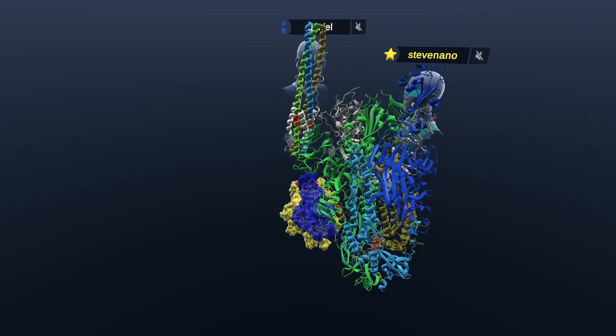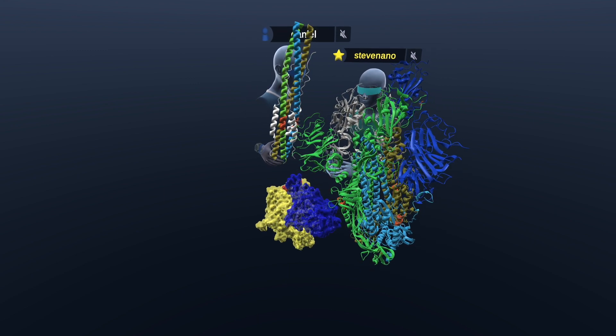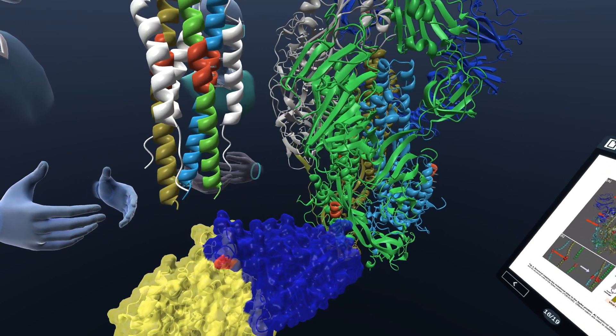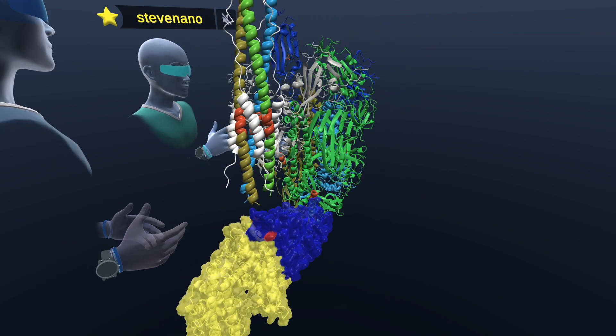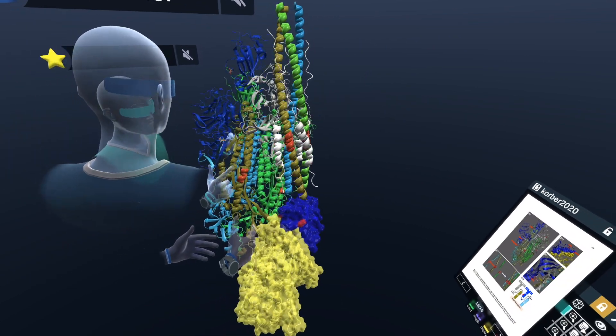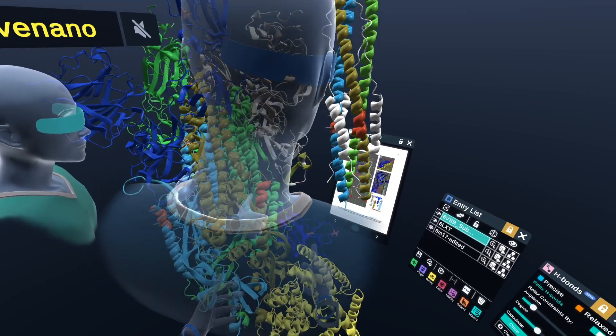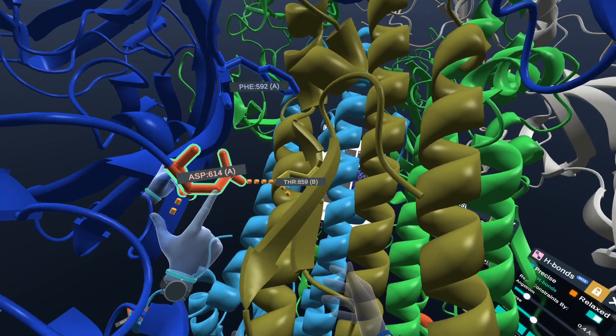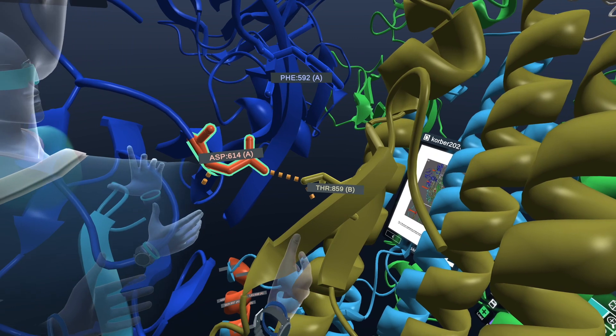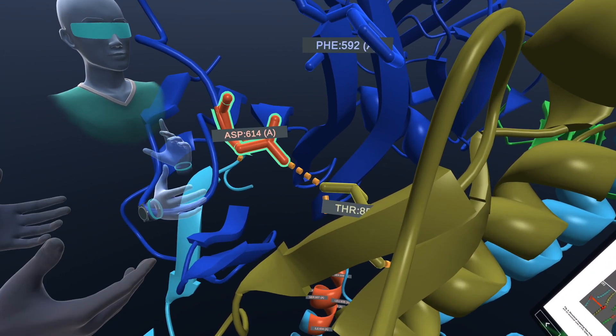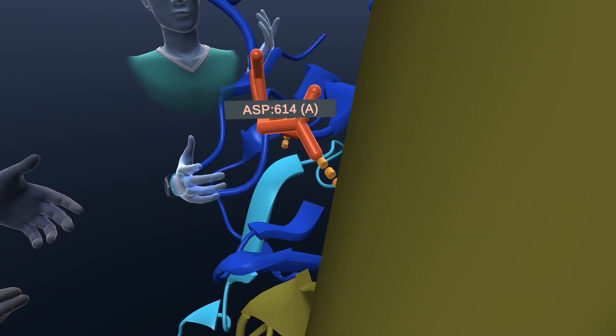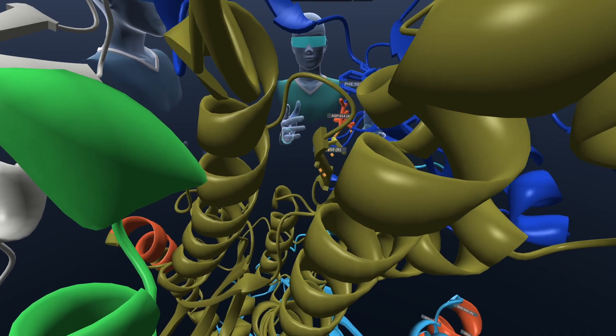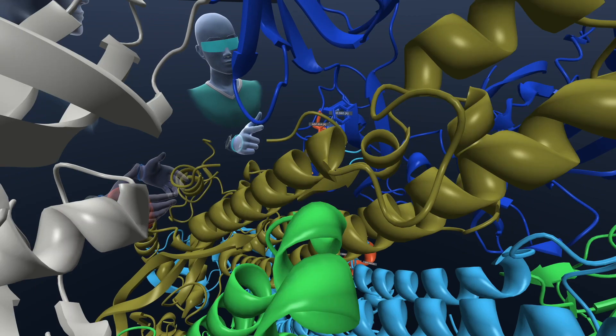So we have in red highlighted all the mutations that we found on different genomic sequences, different virus isolates through the world. And so this mutation that is very controversial these days, which is located over here, the D614G, something that was found in Europe in early February. And it's been spreading very rapidly.